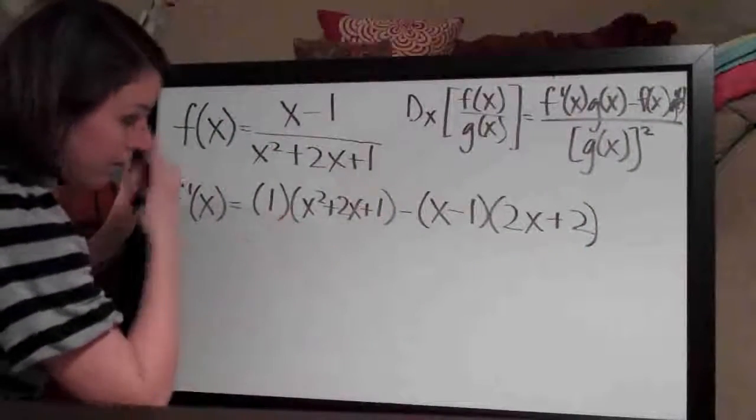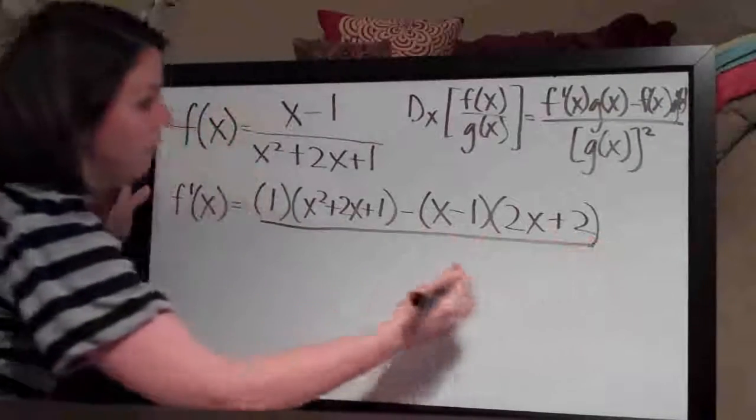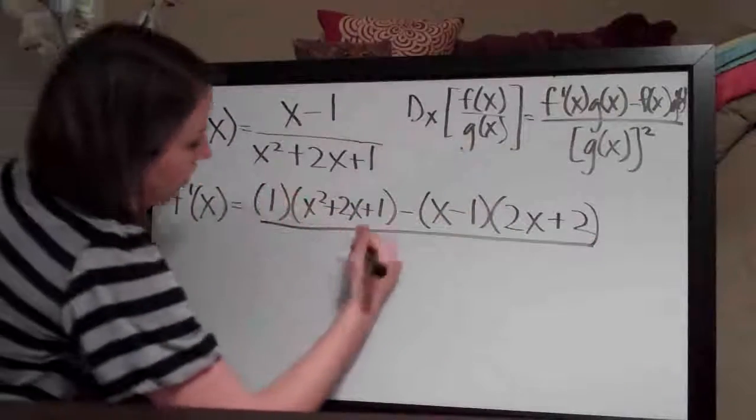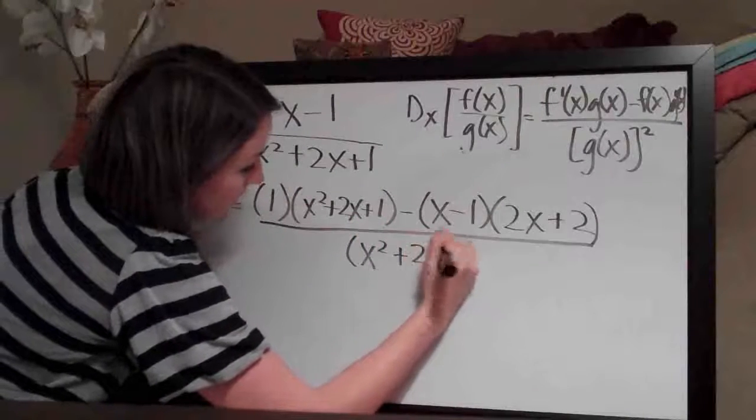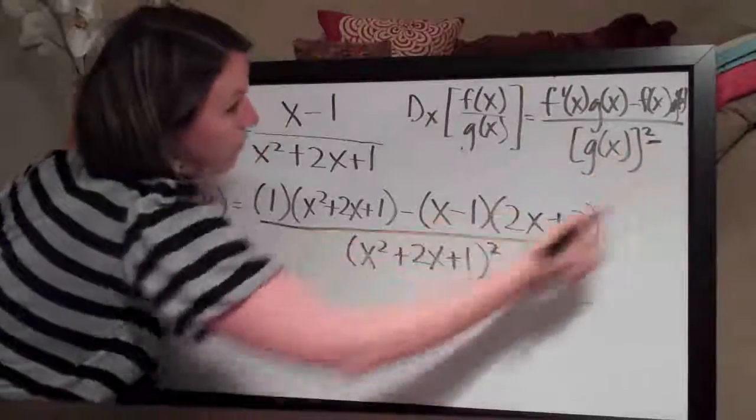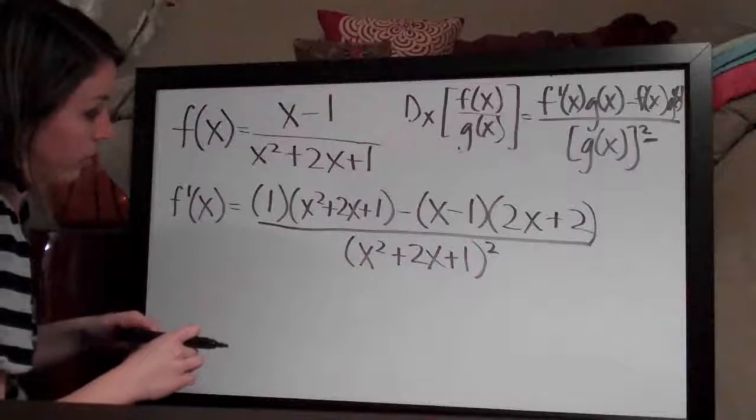So that's the entire top of the equation and then we divide by g(x), or the bottom squared. So we write out (x²+2x+1) and we square that whole thing because this squared is part of the quotient rule equation that we're using.